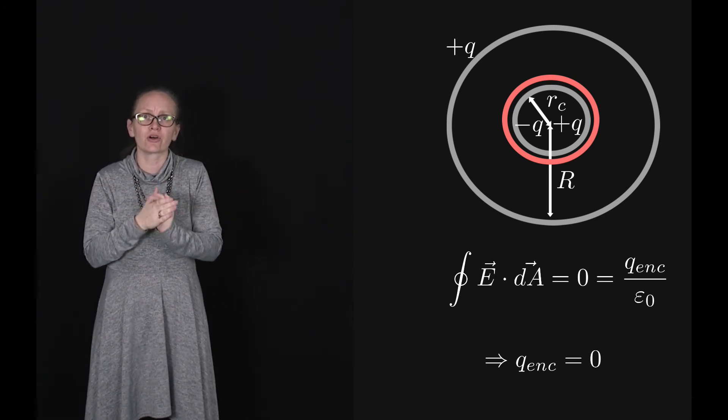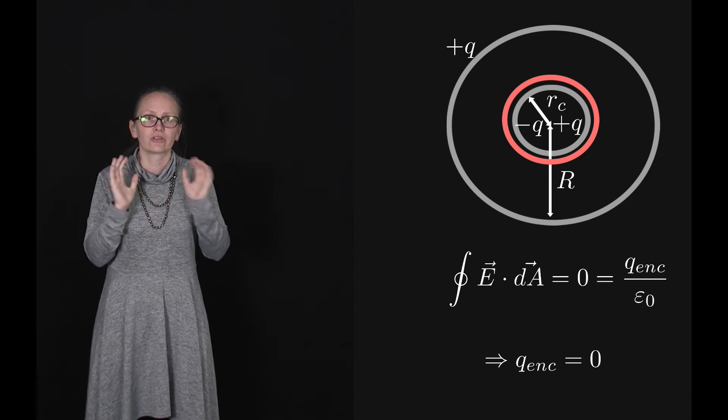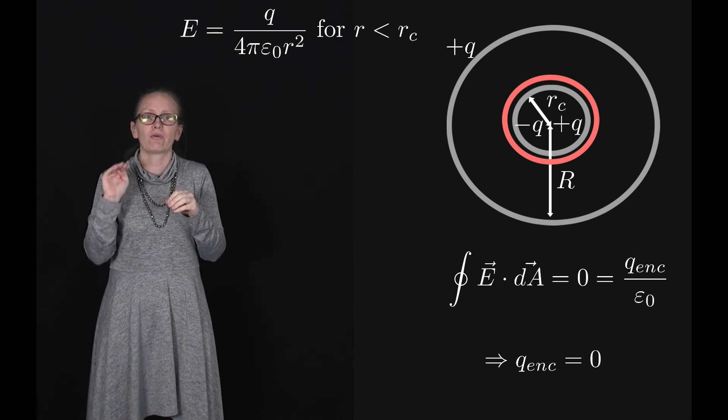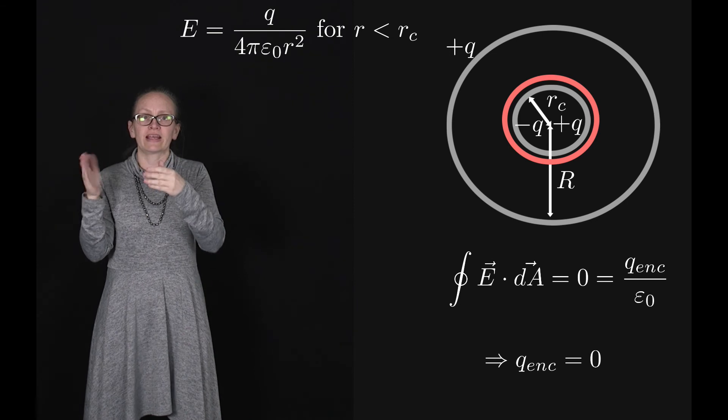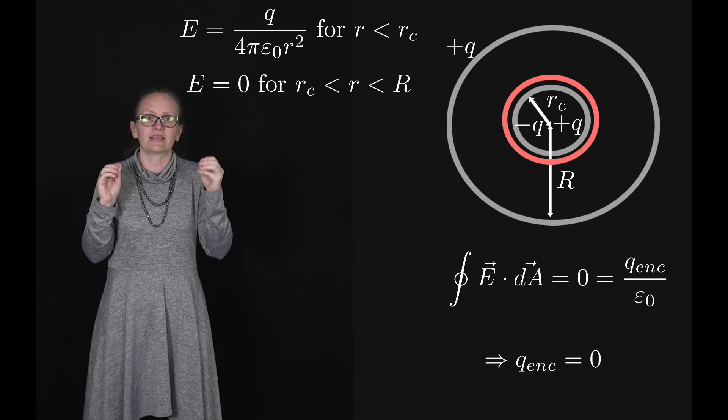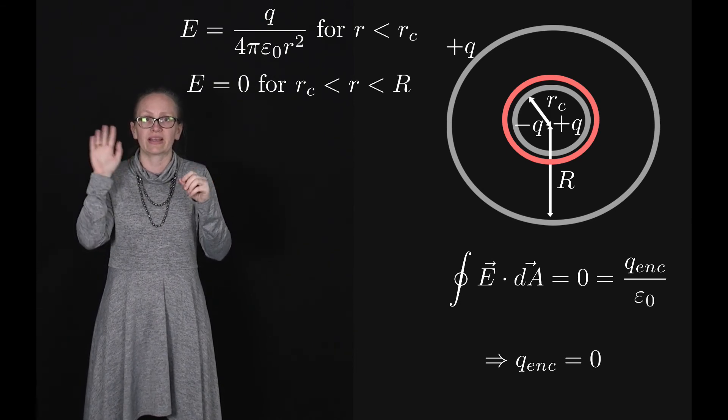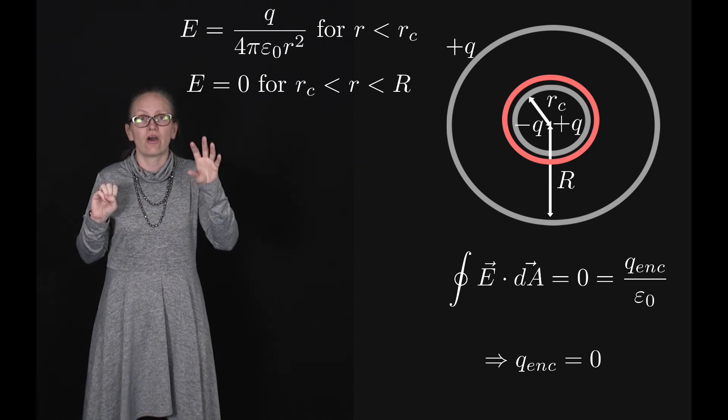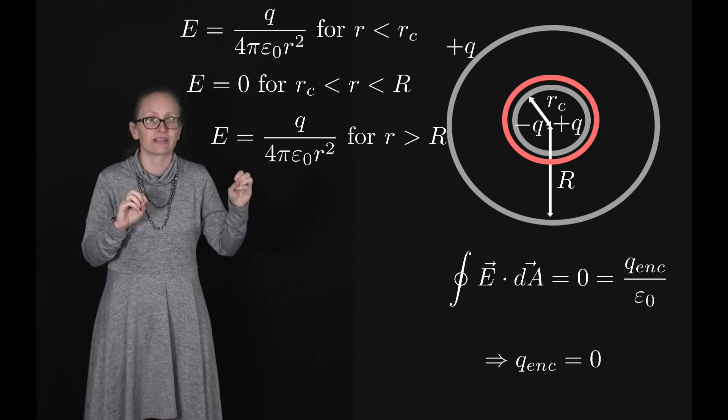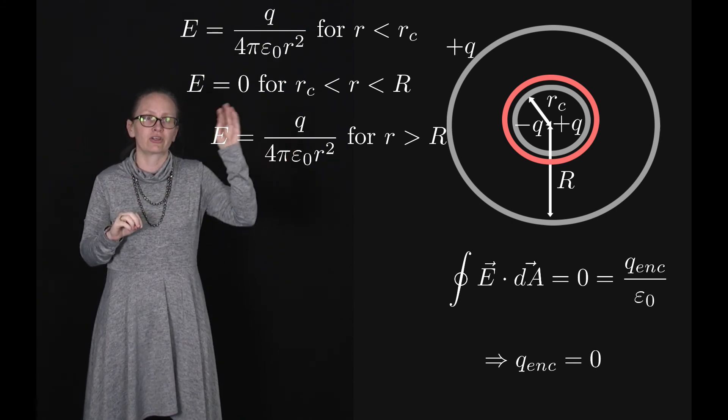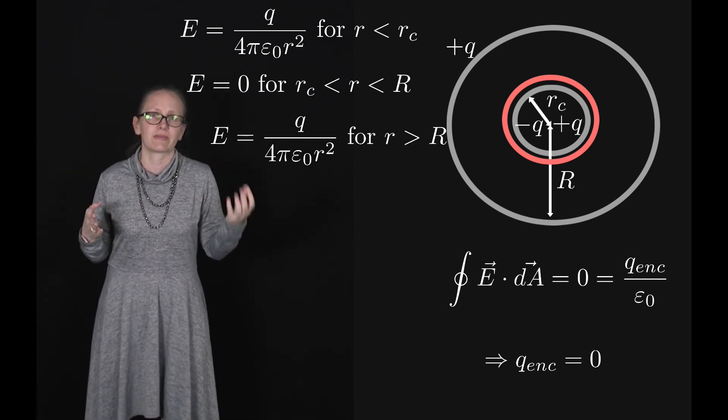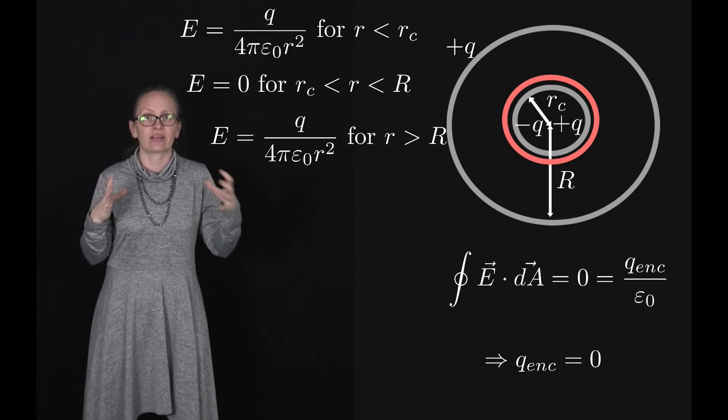Make sure that you know how to use Gauss's law to show that the electric field inside the cavity is given by E equals Q over 4 pi epsilon naught R squared for radii R less than Rc. That inside the conductor the electric field is equal to zero, for radiuses between Rc and capital R, the radius of the conductor. And that for radiuses larger than the radius of the conductor, the electric field is given by Q over 4 pi epsilon naught R squared. The method for doing this is exactly the same as the method used for calculating the electric field due to a sphere of charge.